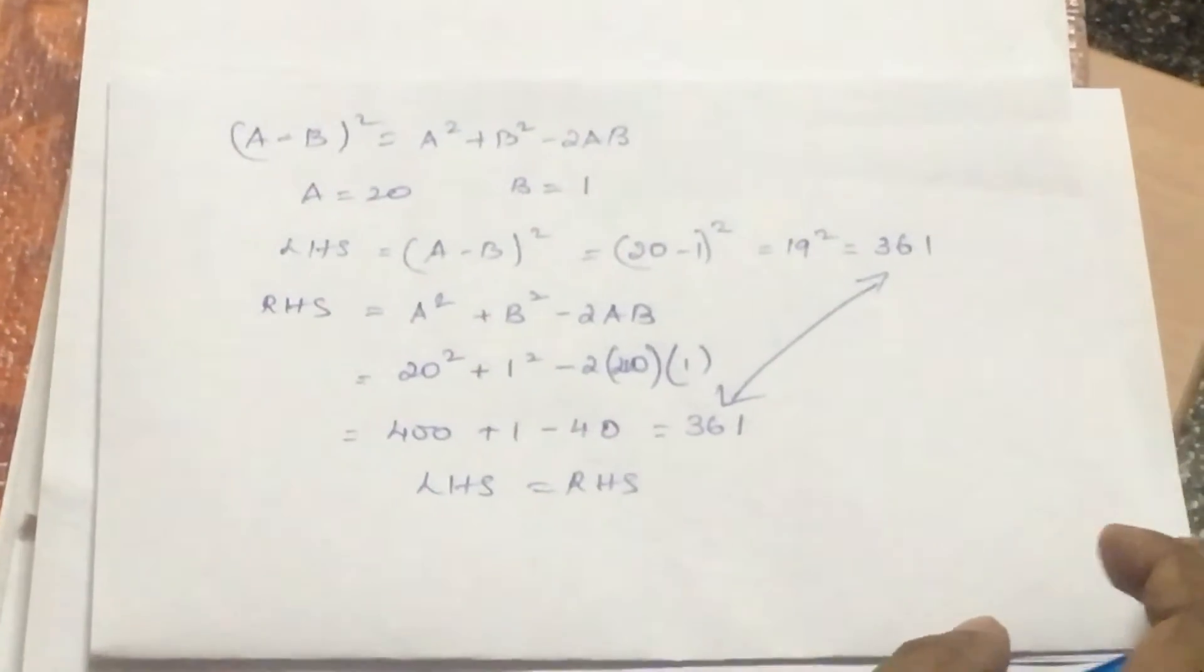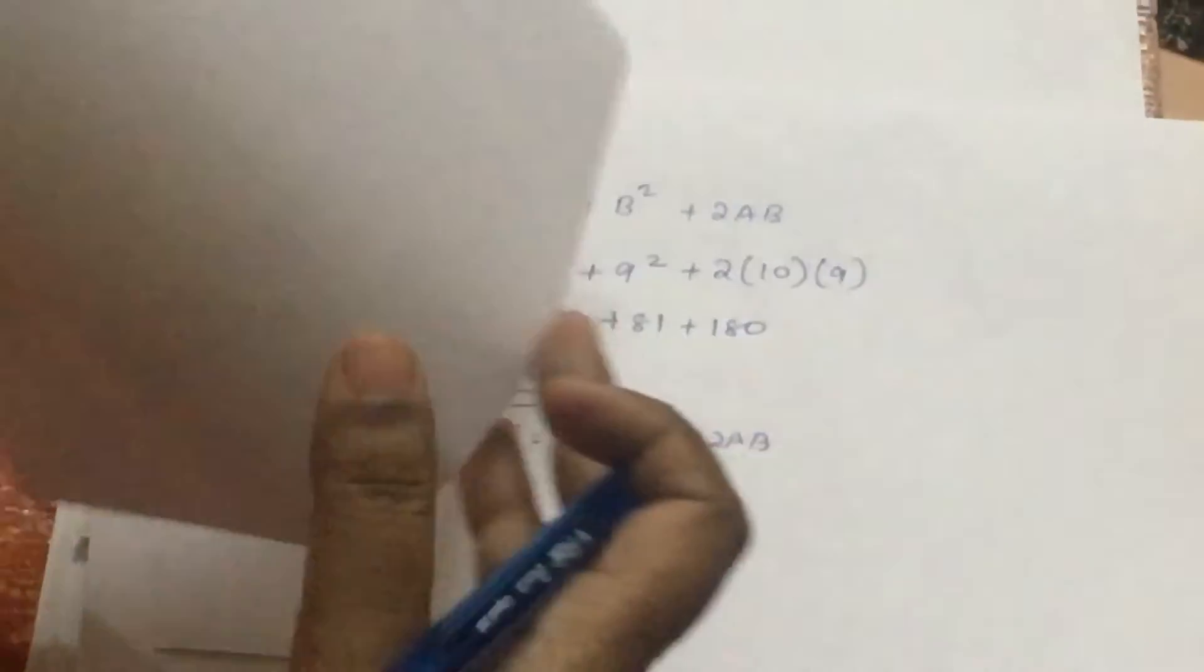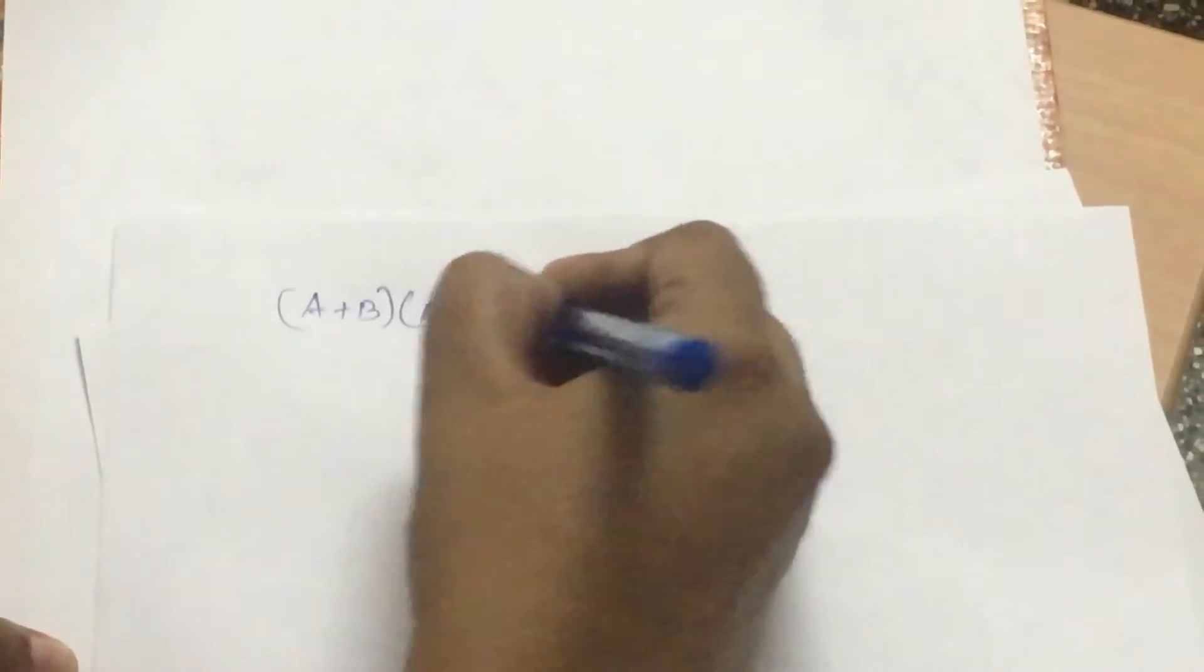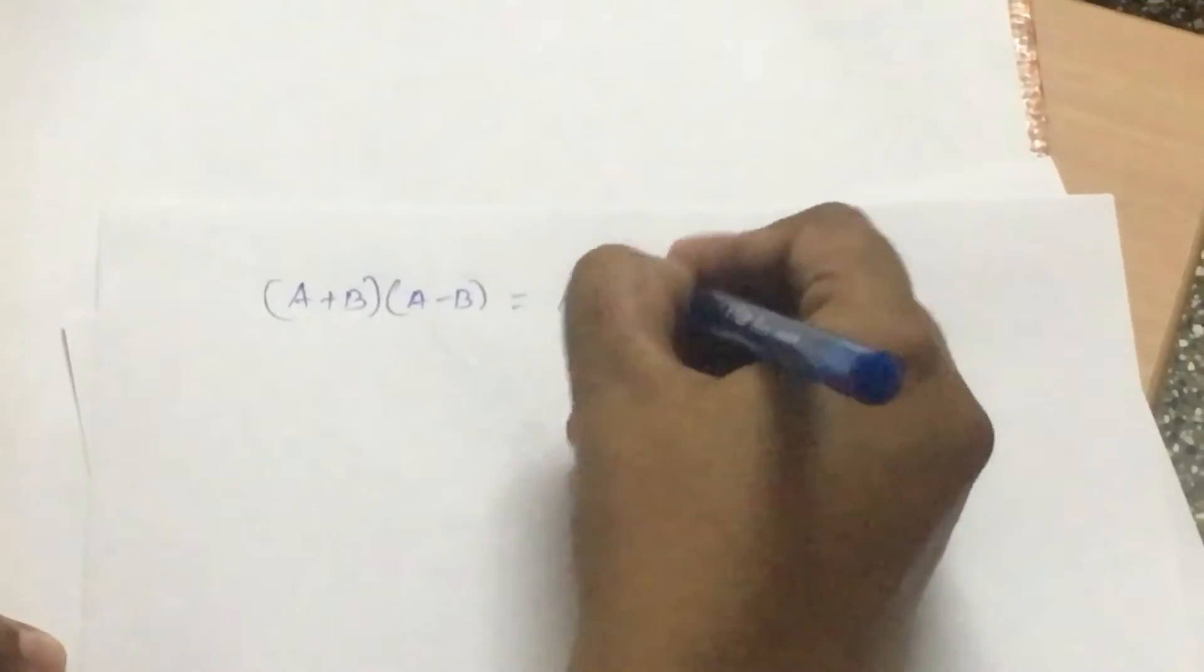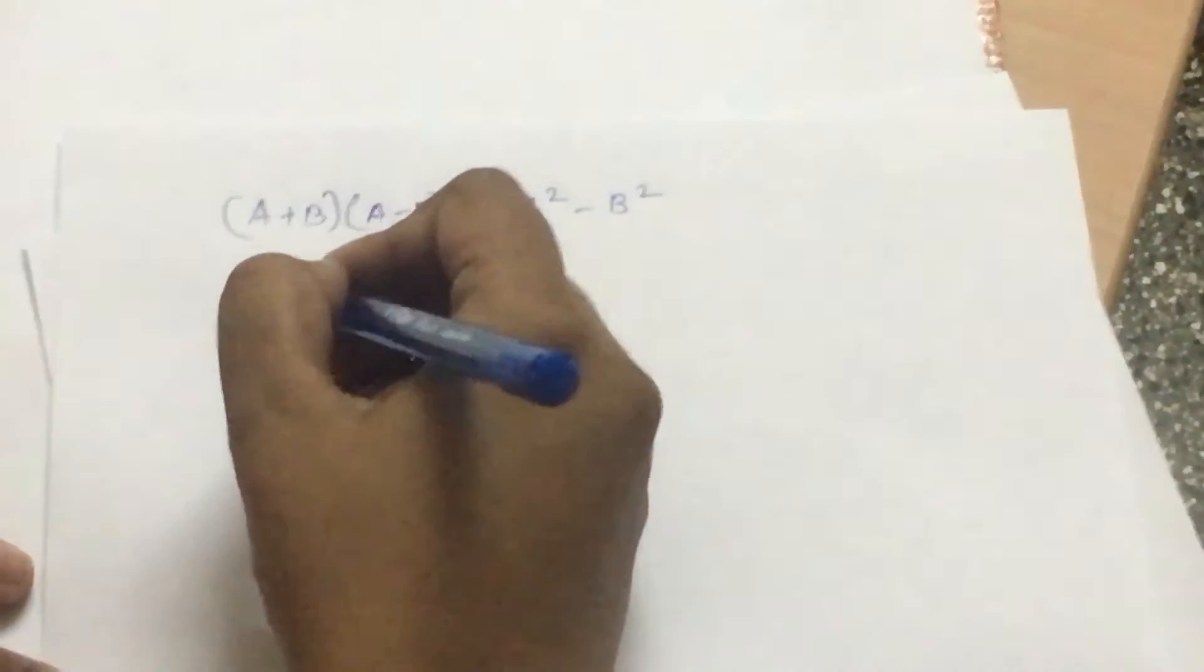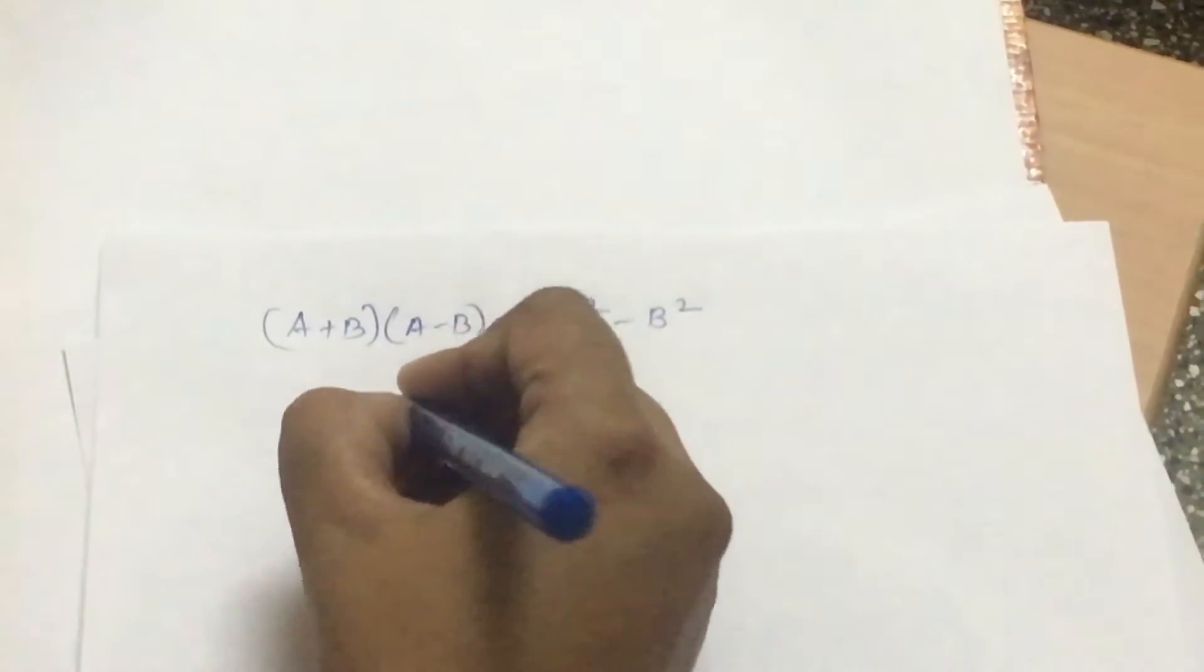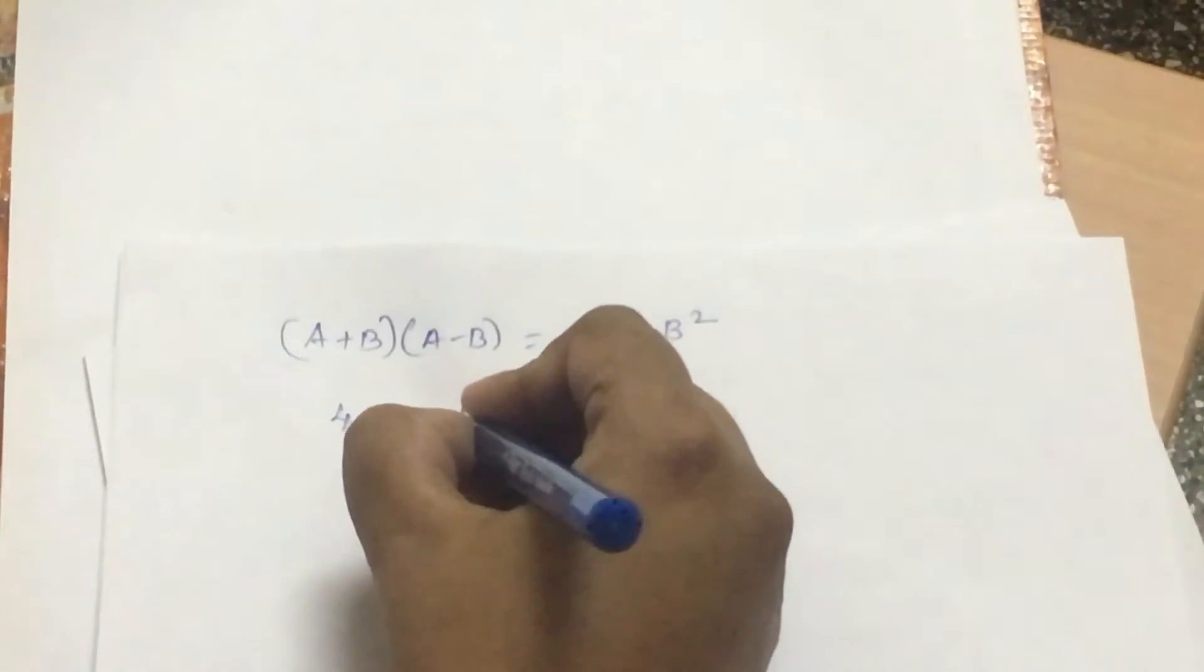Now, the third one as I said is the most important one and before I tell you the importance where can it be used, let's just do a small example. So my example for the day will be, the third identity is (a+b)(a-b) which is a² - b². Now, let's say that I am going to multiply 49×51.